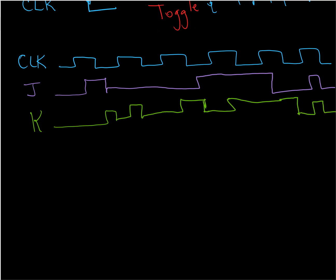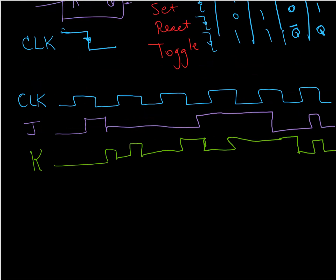And then I want to see what the output Q is doing. Let's draw some lines on it so that we can see where those negative edge clock transitions are.